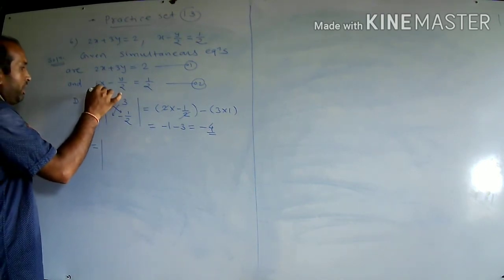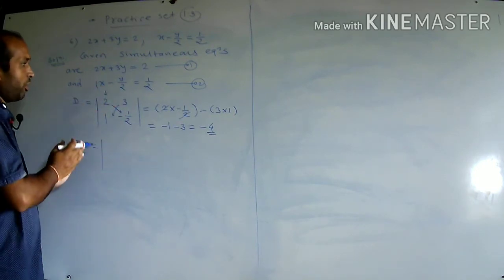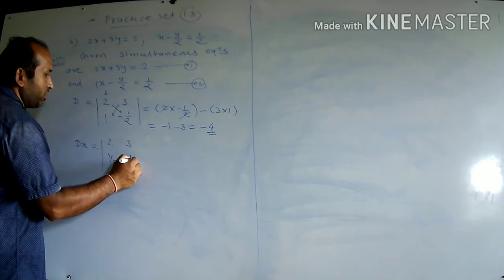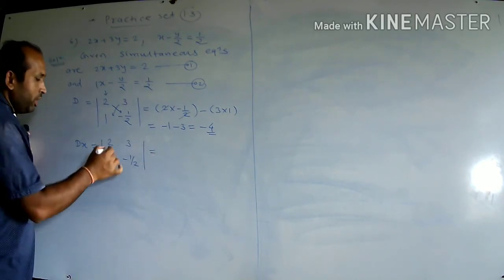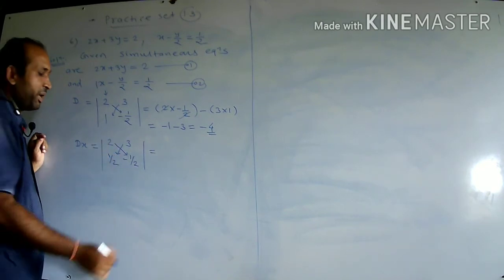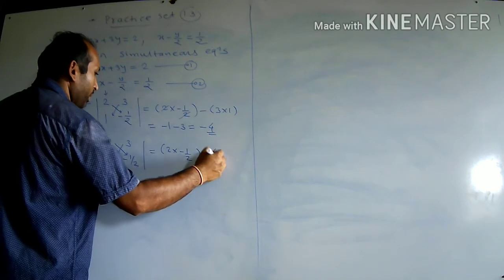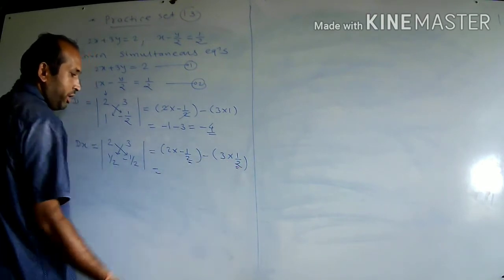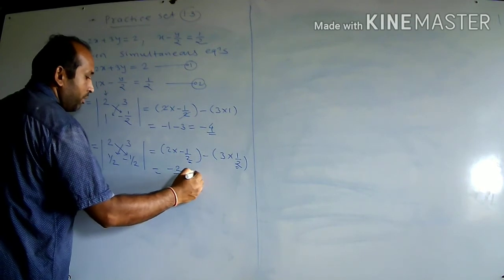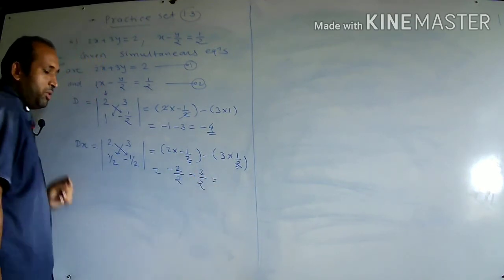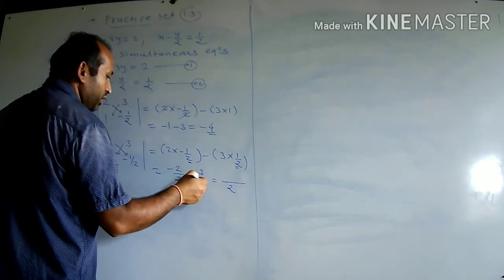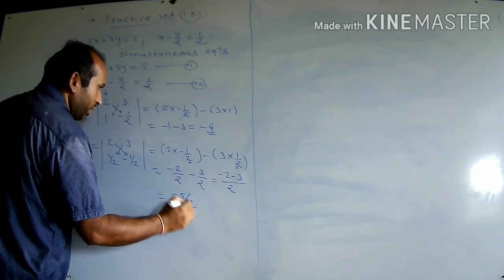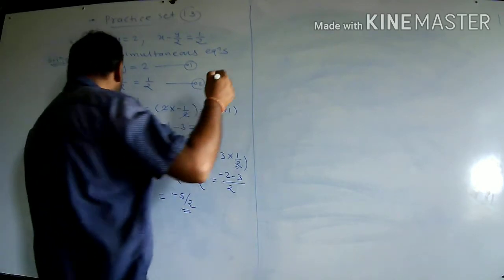For DX: replace first column with constants 2, 1/2; second column 3, minus 1/2 remains as is. Value: 2 into minus 1/2 minus 3 into 1/2. Since denominators are equal: minus 2/2 minus 3/2 = minus 5/2. This is the value of DX.